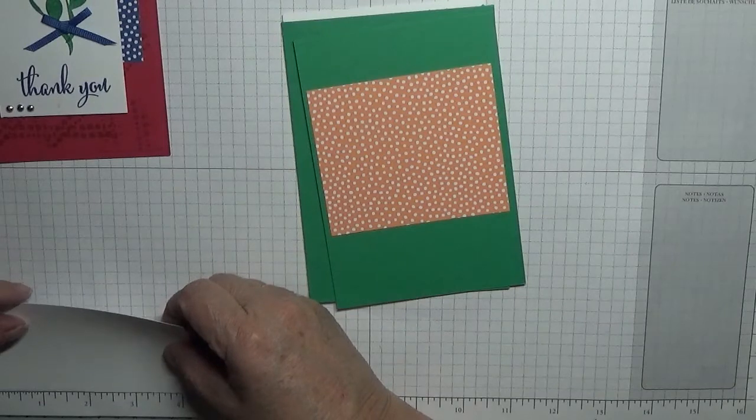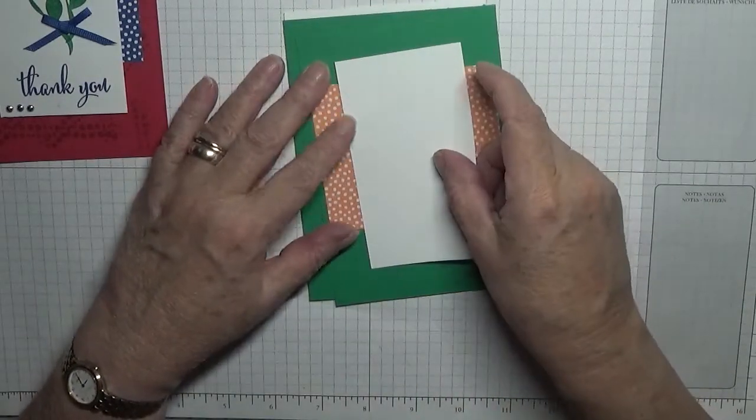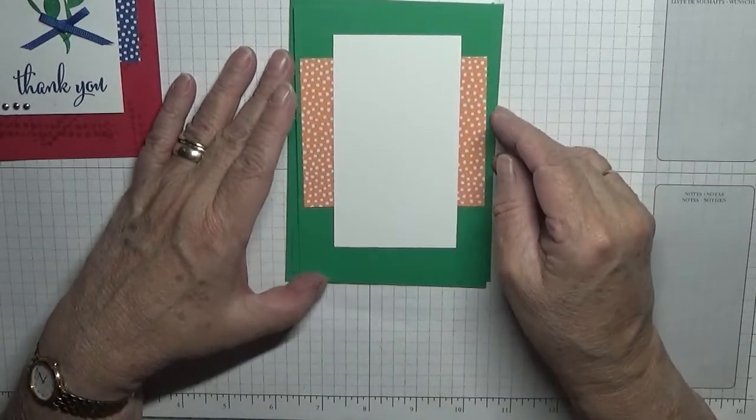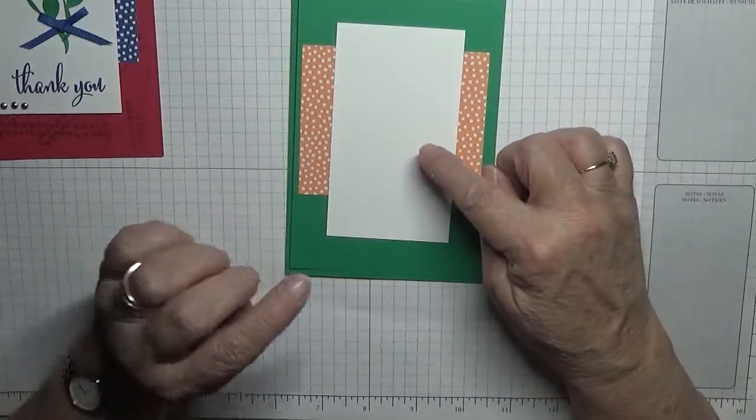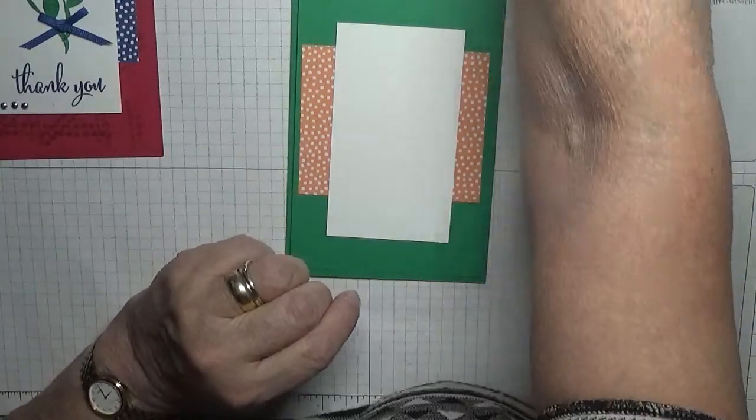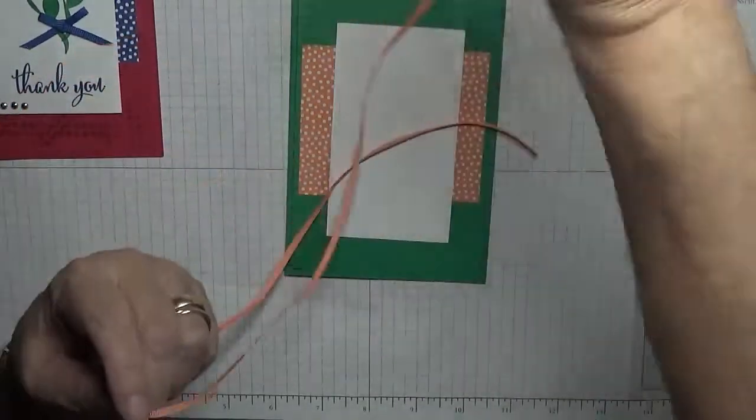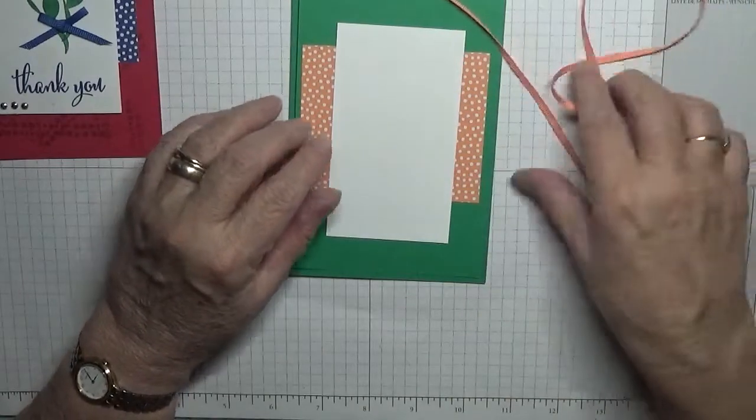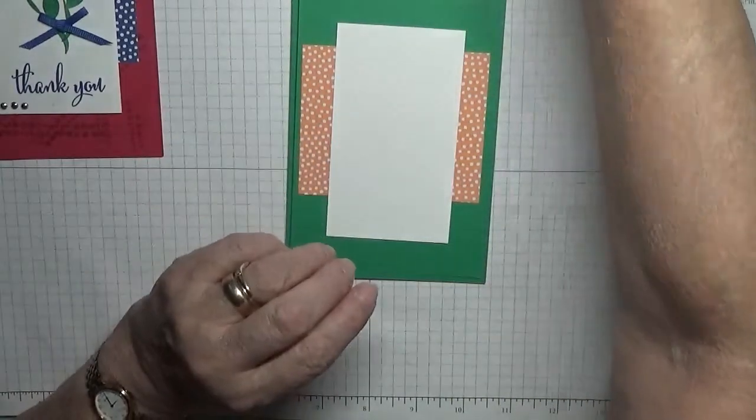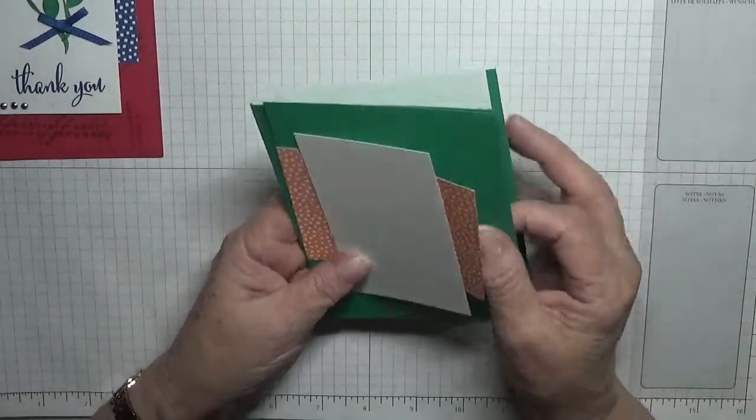Then I have a piece of Whisper White at 4 and 3/8 by 2 and a half, and that will sit on top like that. I also have a piece of ribbon of Grapefruit Grove to go on top of the flower.